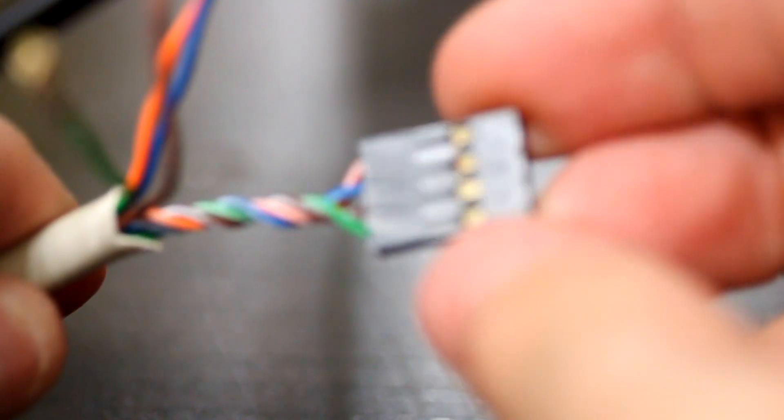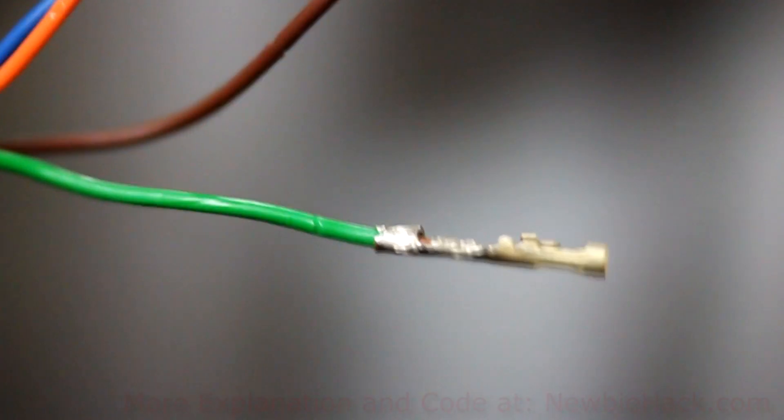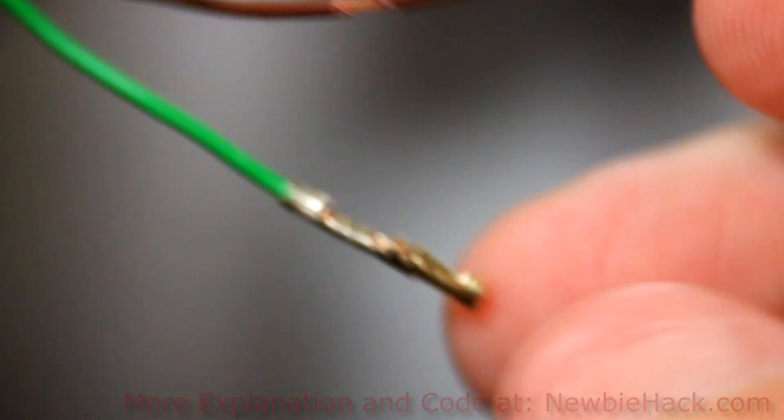In this video I'm going to show you how to put together a female header with crimp pins inside. We'll start by putting one of these crimp pins on one of the wires.